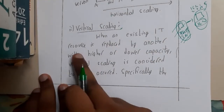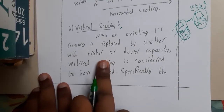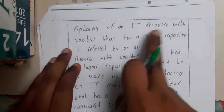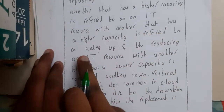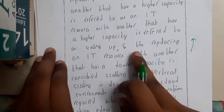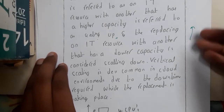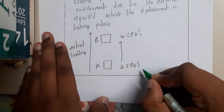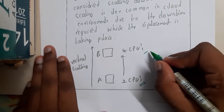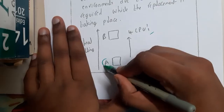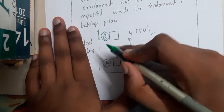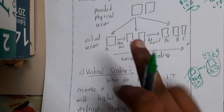When an existing IT resource is replaced by another with a higher or lower capacity, that is considered vertical scaling. Replacing an IT resource with one of higher capacity is referred to as scaling up. If you reduce its speed, size, or space, that is called scaling down. For example, previously you had a two-CPU system and now you convert to a four-CPU system — that comes under vertical scaling.